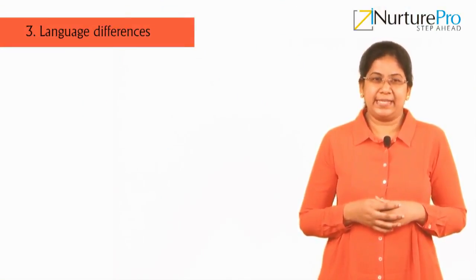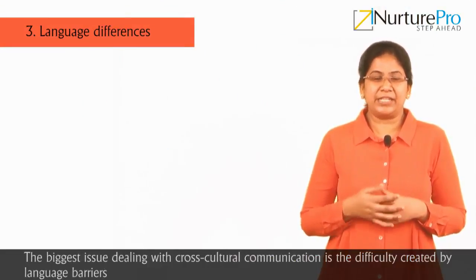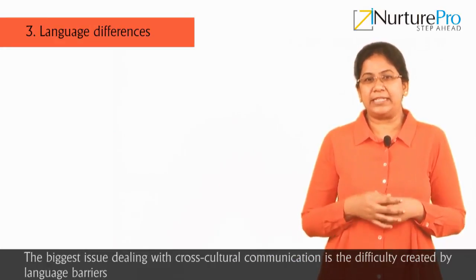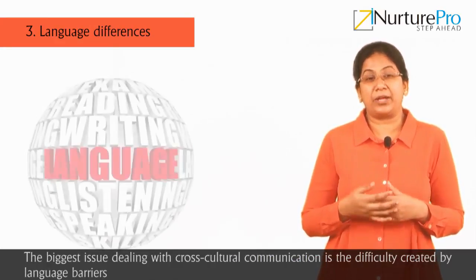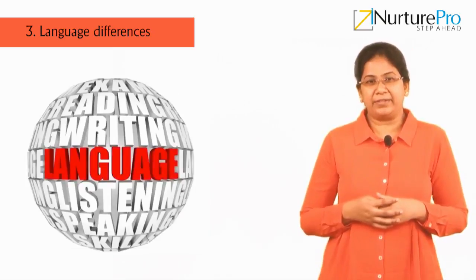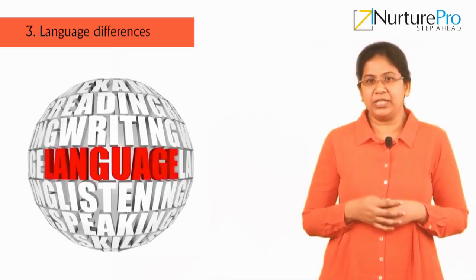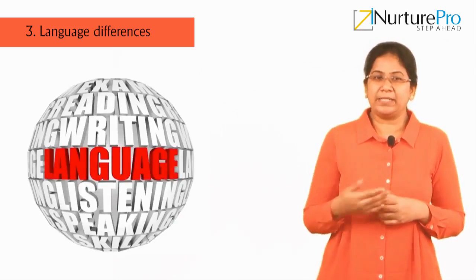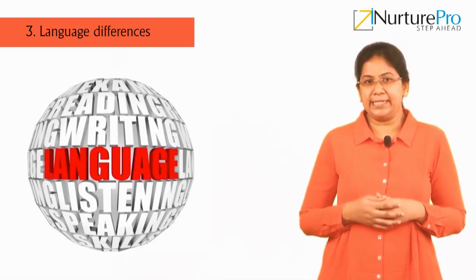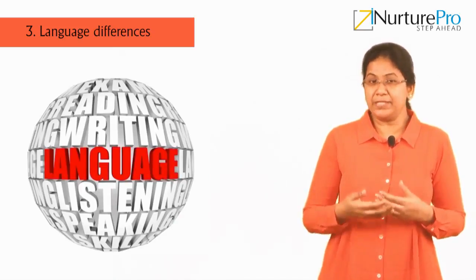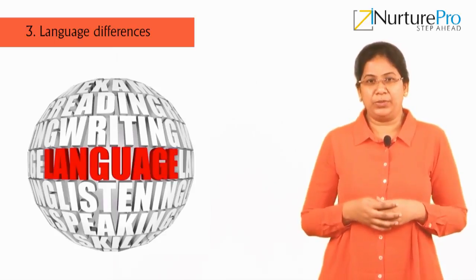Factor 3: Language differences. The biggest issue dealing with cross-cultural communication is the difficulty created by language barriers. This barrier can be overcome if there is a common language like English that both parties understand, even if not proficient. In the absence of a common language, there are some strategies that people can use to help establish a rapport.